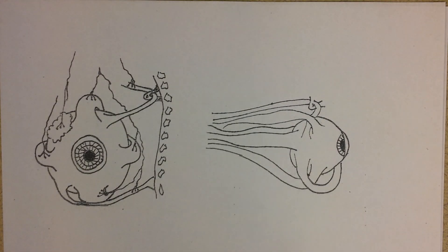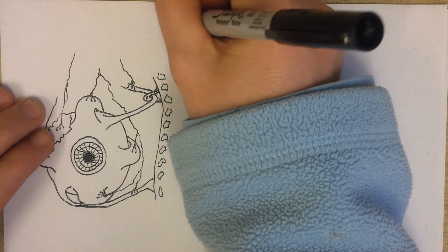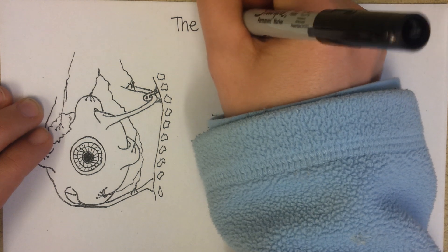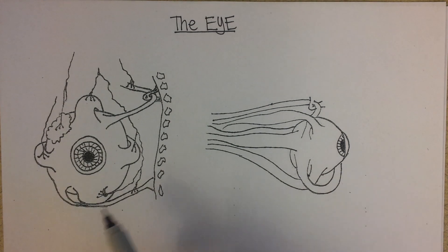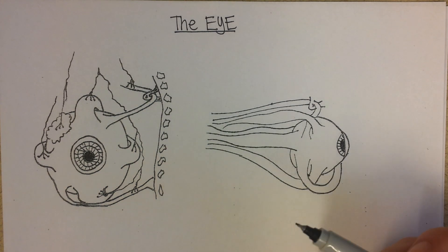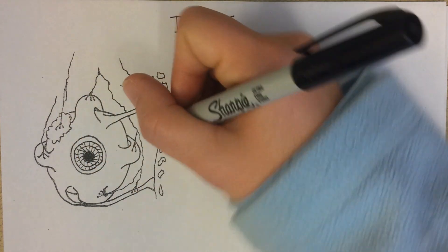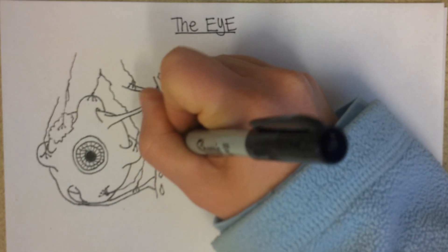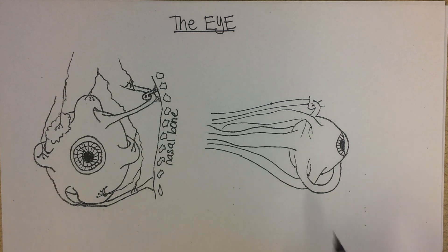We'll start our study of the eye by looking at the outside of it and the muscles that move it. Here's an eyeball from the front, and this is meant to be the nasal bone, so this would be the right eye looking straight on, and over here this is the right eye again just looking at it from the side.